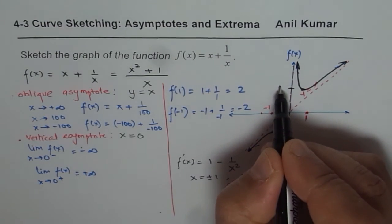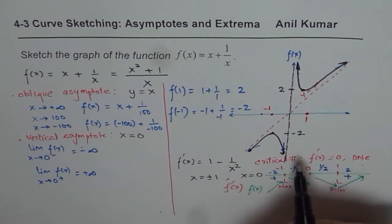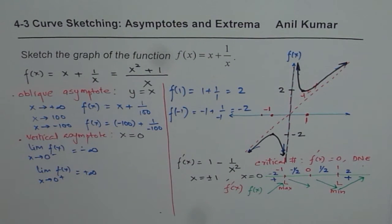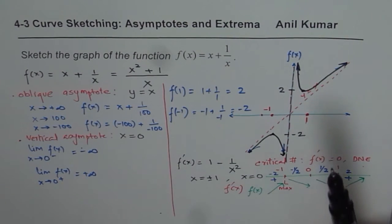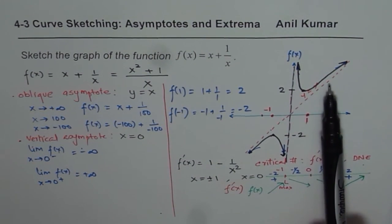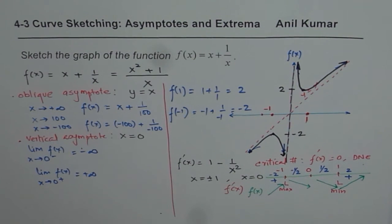The local maximum value is -2 at x = -1, and the local minimum value is 2 at x = 1. I hope this helps you understand how to figure out the asymptotes, their equations, behavior near the asymptotes, and how to use the first derivative to find local maximum or minimum to sketch the graph of f(x) = (x² + 1)/x.